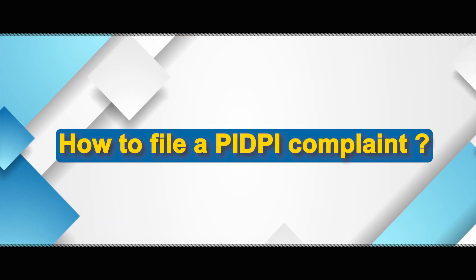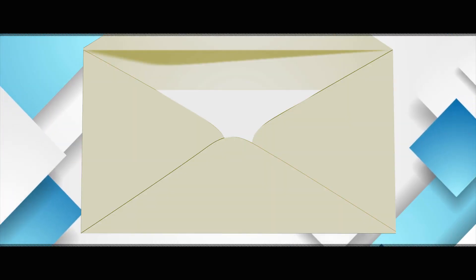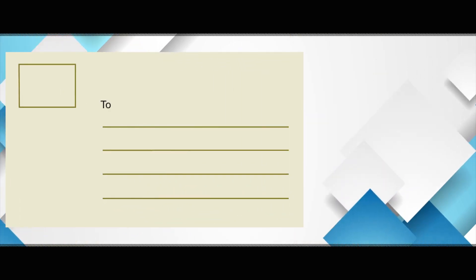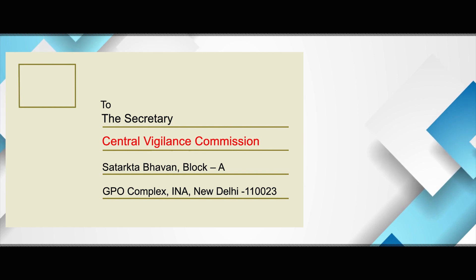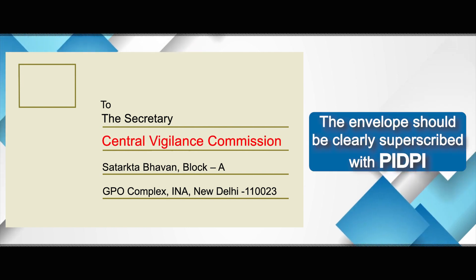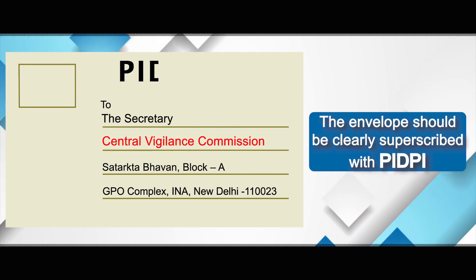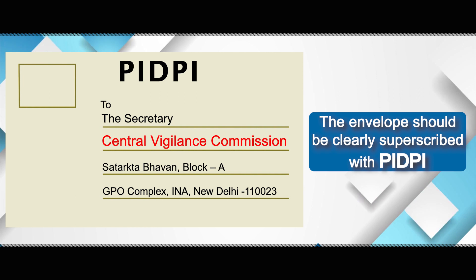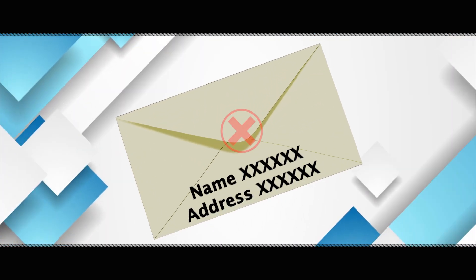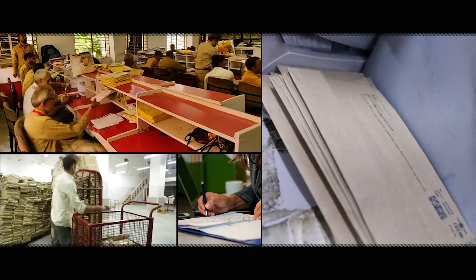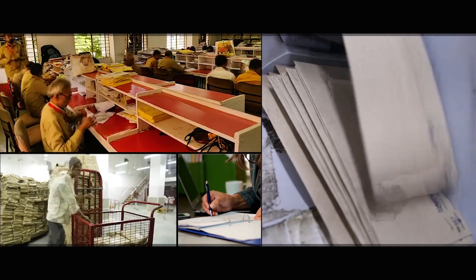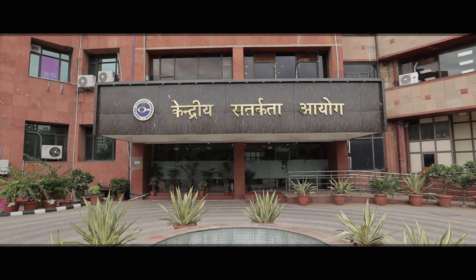Let us understand how to file a PIDP complaint. The PIDP complaint should be in a closed envelope addressed to the Secretary, Central Vigilance Commission. The envelope should be clearly superscribed with PIDP. Please remember that your name and address should not be mentioned on the envelope. PIDP complaints can be sent by speed or registered post also without name and address.